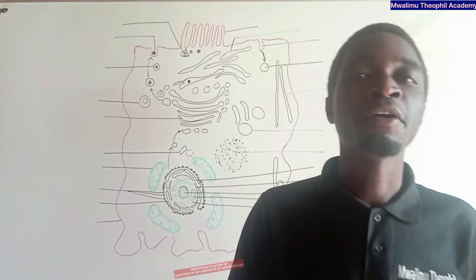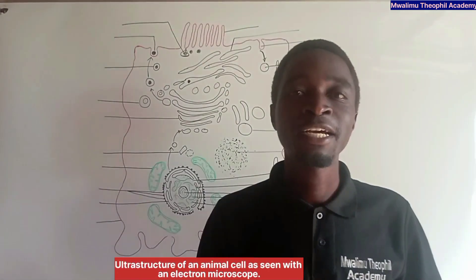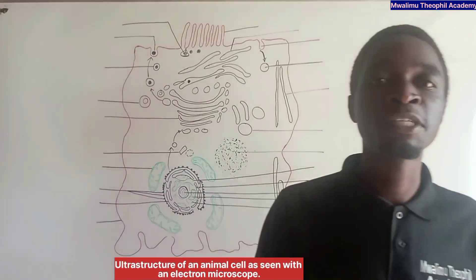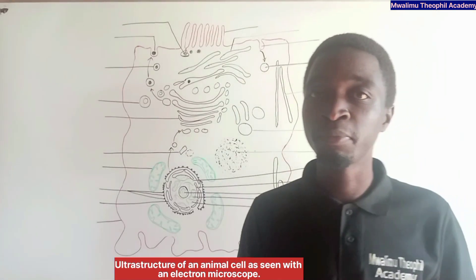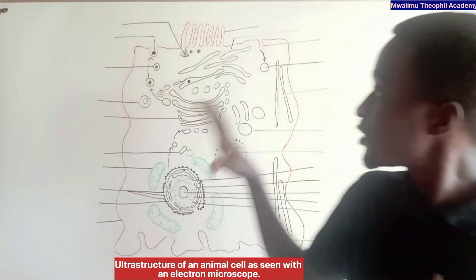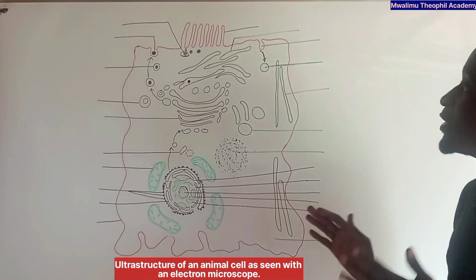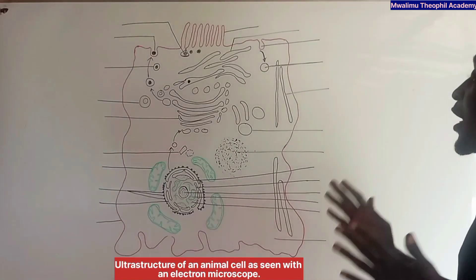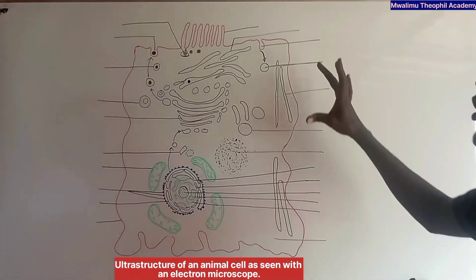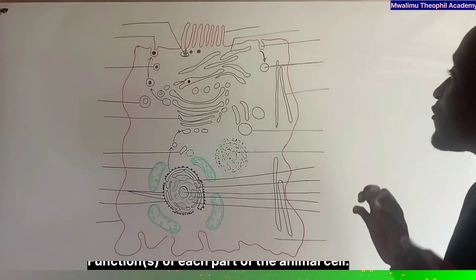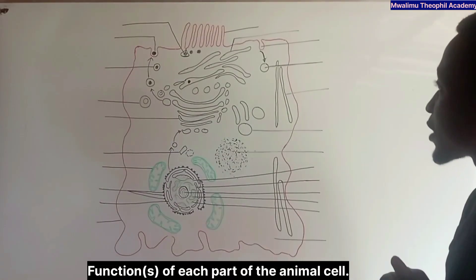In this lesson you are going to learn about the structure of an animal cell as seen with an electron microscope. This is an animal cell structure as seen with an electron microscope. In this lesson we are going to see the function of each part of an animal cell.